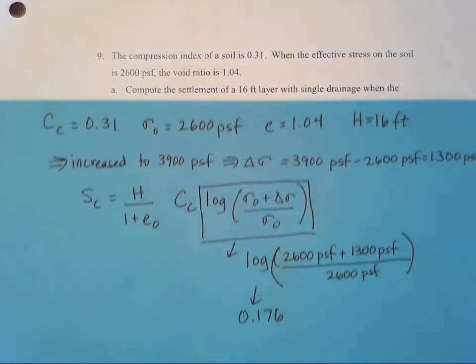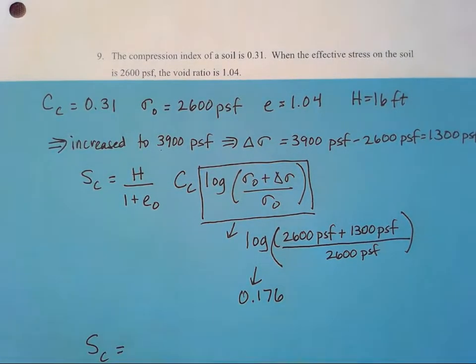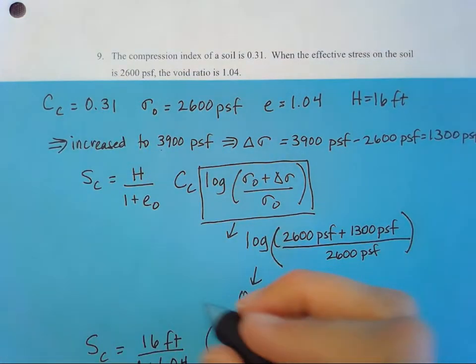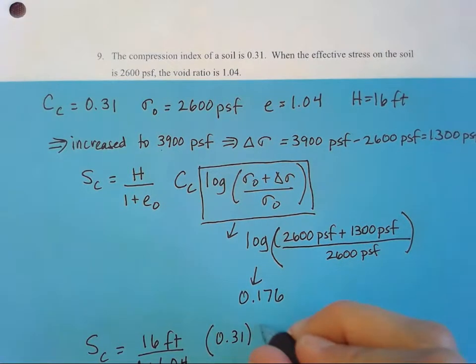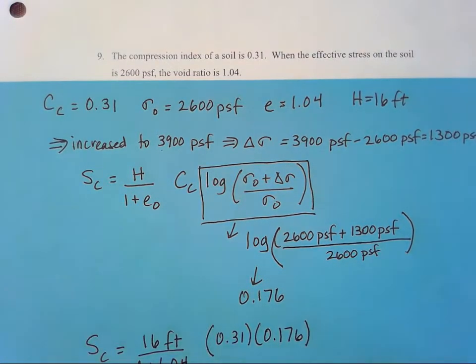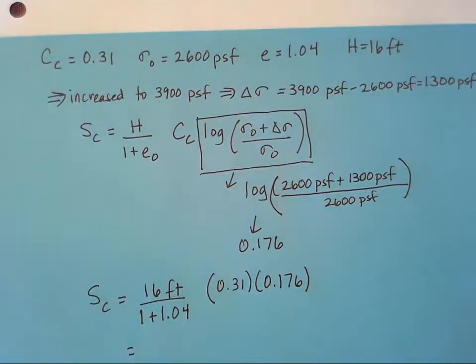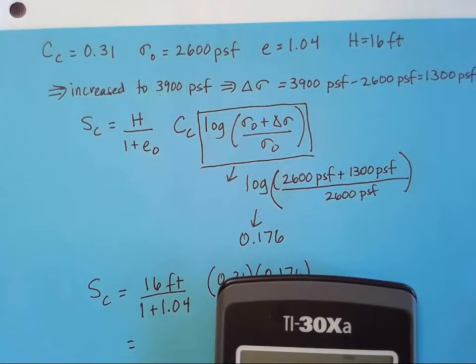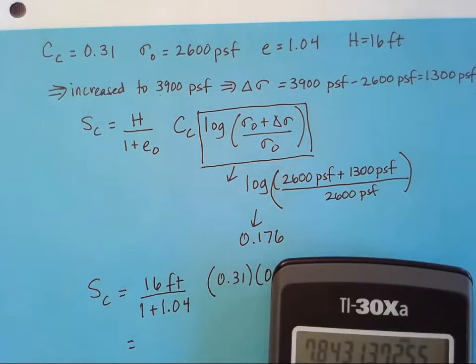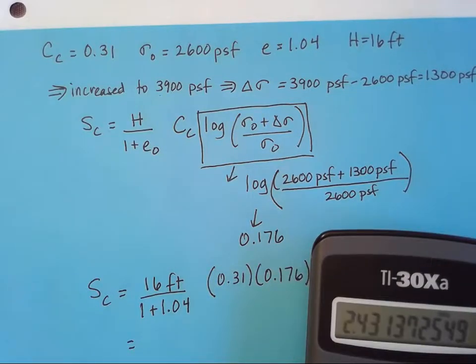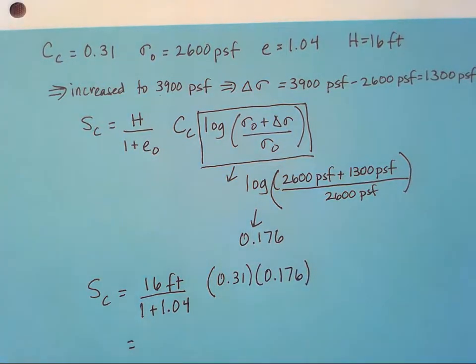So let's go ahead and look at this formula now. My S sub C, plug in our values. H is going to be 16 feet. 1 plus my initial void ratio 1.04 times C sub C of 0.31 times 0.176. So I'll plug that into my calculator. I have 16 divided by 2.04 times 0.31 times 0.176. And I get a settlement of 0.428 feet.